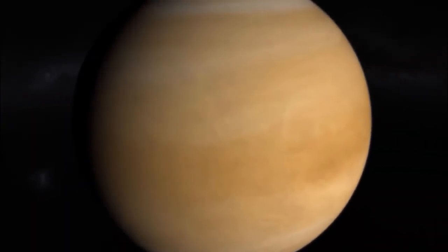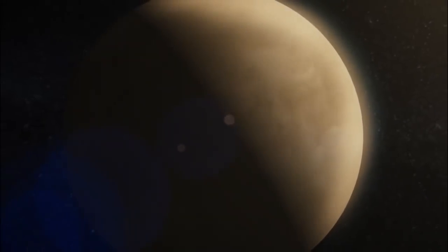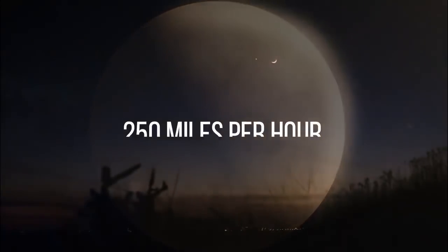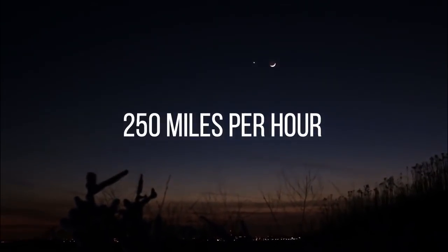This is only one of countless strange occurrences on Venus caused by the celestial body's super rotation, which means that the upper atmosphere near the equator spins far faster than the actual planet. On Venus, powerful storms erupt, reaching speeds of up to 250 miles per hour.